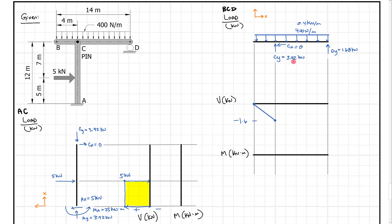At the support, we go up 3.92 kilonewtons, bringing us from minus 1.6 up to 2.32. So I'll label this 2.32 and connect the dots. Moving to the right of that support, we still drop at 0.4 kilonewtons per meter. The remaining length is 14 minus 4 = 10 meters, so 10 × 0.4 = 4. Starting from 2.32 and subtracting 4 gives us minus 1.68 at the right end. I'll label this minus 1.68 and connect the line, then shade in the shear diagram.